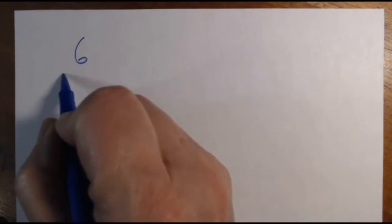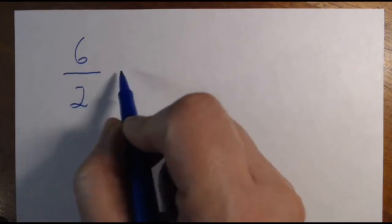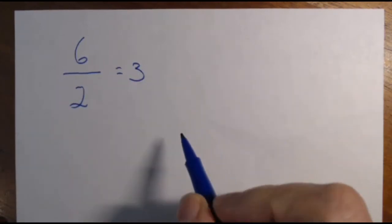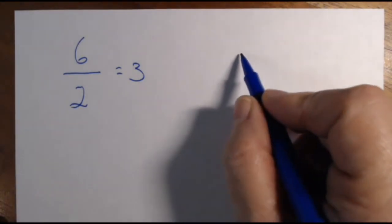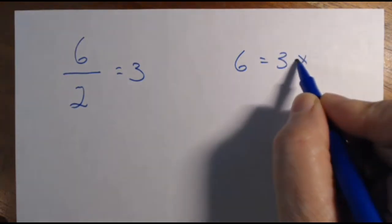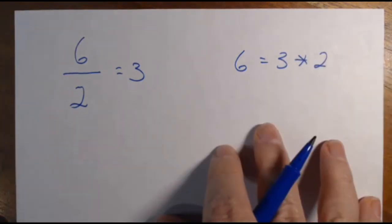The last two things that we need to see are pretty quick. So if I take this ratio, 6 divided by 2, we know that that's equal to 3. But there's a way that I can write this division problem as multiplication. I can say that 6 equals 3 times 2, and it pretty much holds the same meaning.